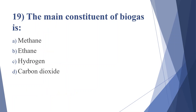Nineteenth question: the main constituent of biogas is — option A: methane, option B: ethane, option C: hydrogen, option D: carbon dioxide. Answer is option A, methane.